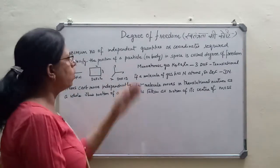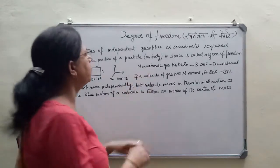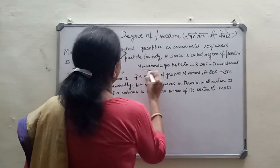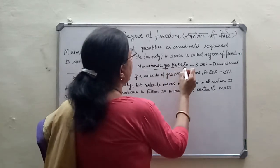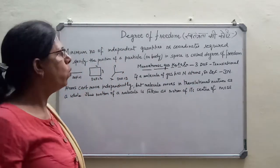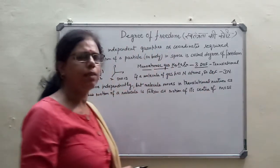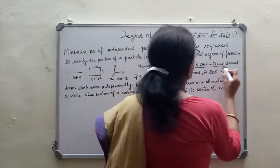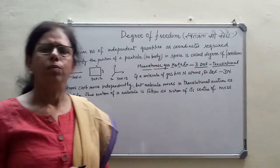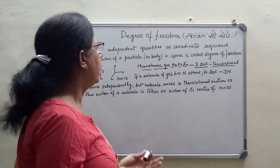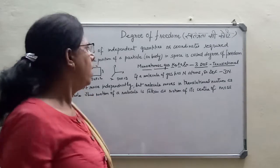अब हम इसको gaseous molecules और atoms के ऊपर apply करें। सबसे पहले सबसे simple case लेते हैं - monoatomic gas का, जैसे कि xenon, helium और radon gases हैं। यह monoatomic gases हैं, तो इसमें जो total degree of freedom है वो 3 है, और वो 3 translational होगी। मतलब atom X, Y और Z axis पर move कर सकता है - उसकी 3 translational motion होगी।